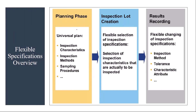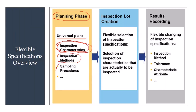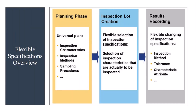The flow is: during the planning phase, you create a universal inspection plan where you will maintain all the inspection characteristics, devices, inspection methods, sampling — everything you will maintain in the inspection plan. Next, during the lot creation phase, you do a flexible selection of inspection specifications. During lot creation, you will be selecting the required characteristics into the lot. For example, if your universal plan has 10 MICs but during the lot you want to inspect only 4 MICs, you will be selecting those 4 MICs from the 10, which I will show in the system.